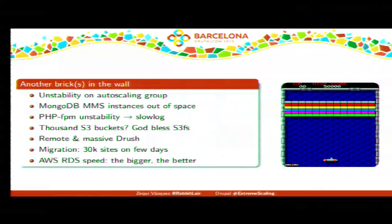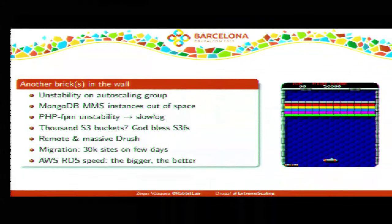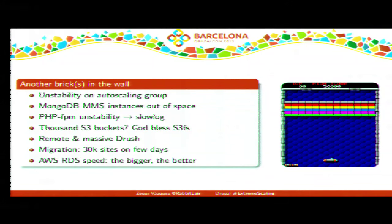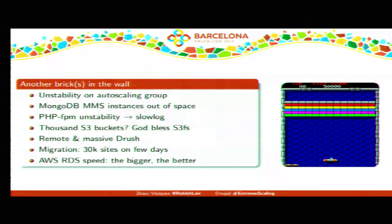Other problems we encountered: instability in the autoscaling group — Varnish and Node.js containers were getting destroyed when the autoscaling group scaled down randomly. We solved this by separating into one fixed worker for those containers and one autoscaling group with only the Nginx/Drupal containers. This happened right in the middle of migration with only three days left and we were at only about 20% completion.